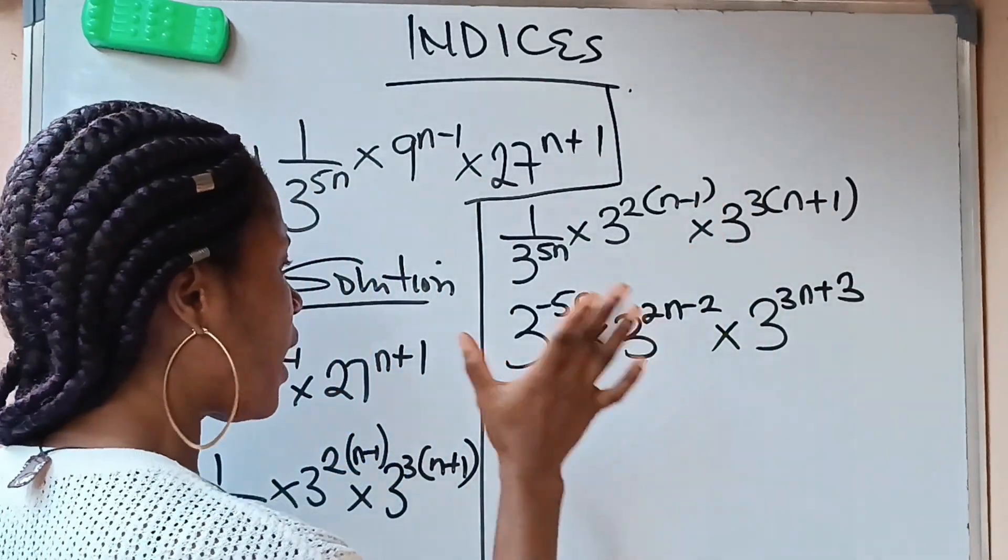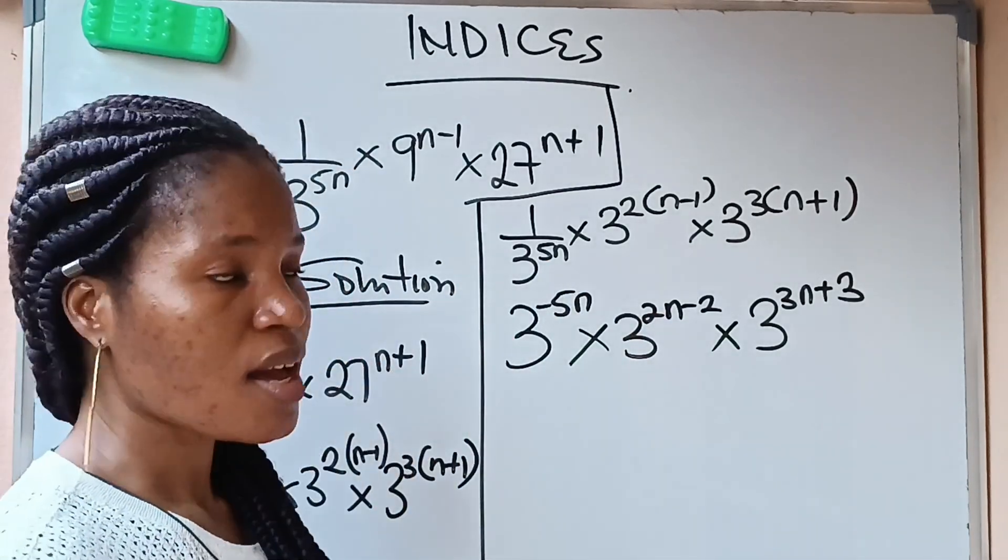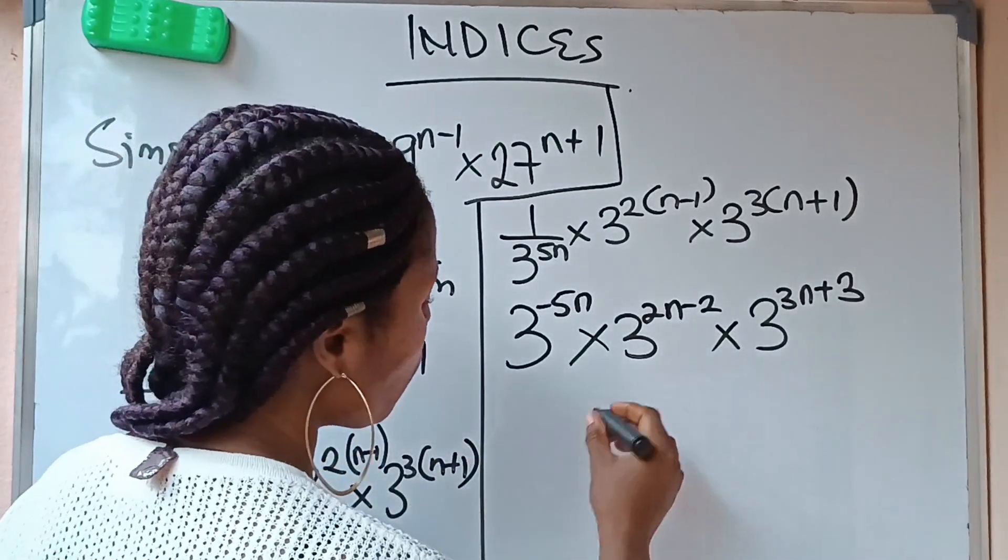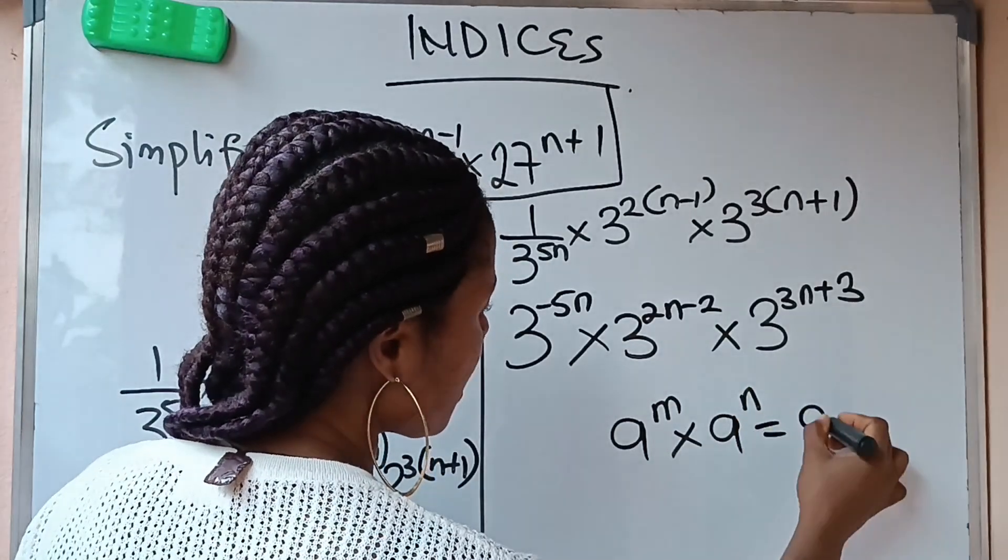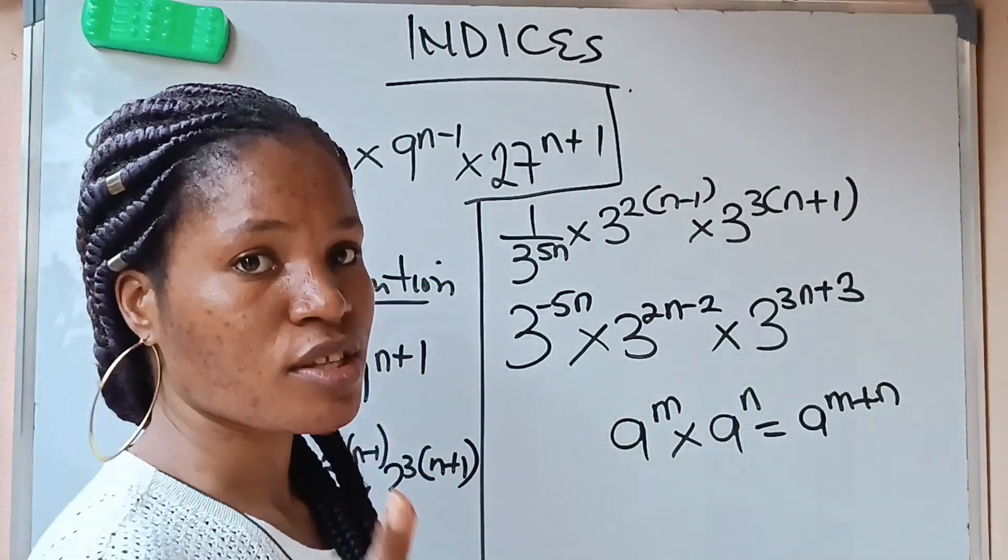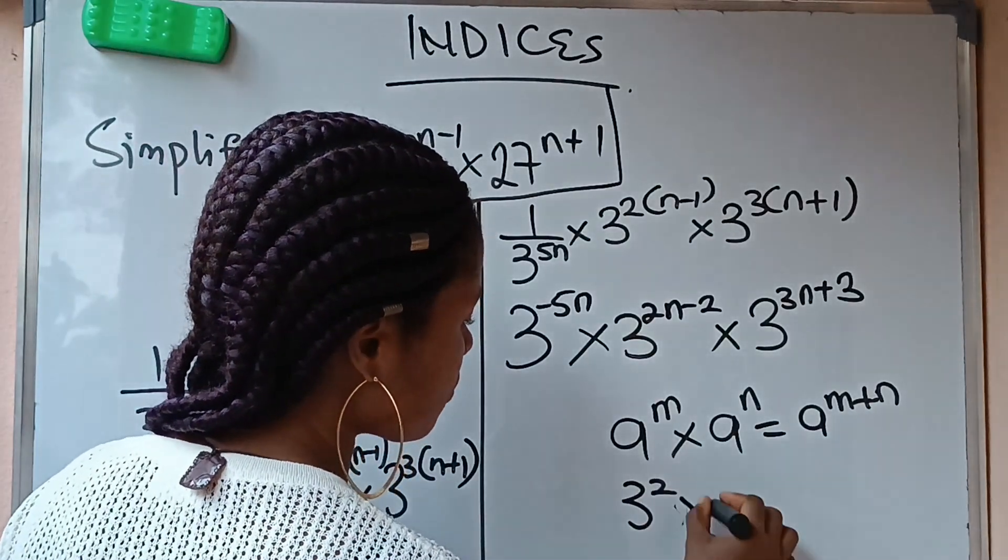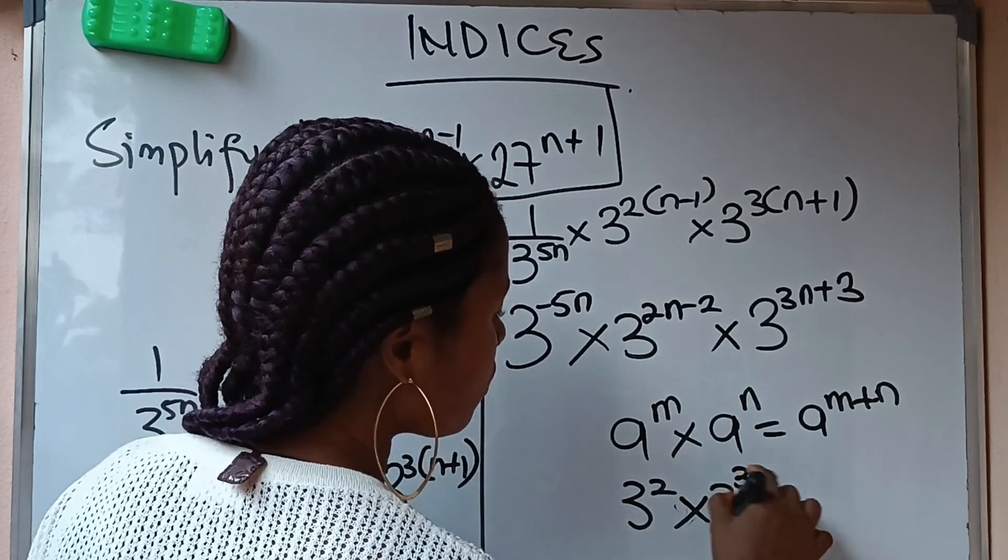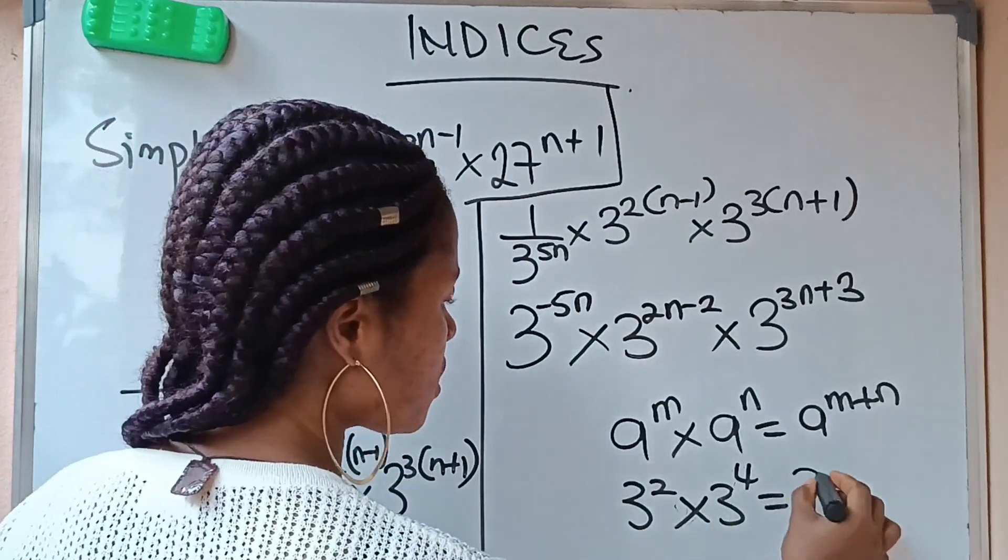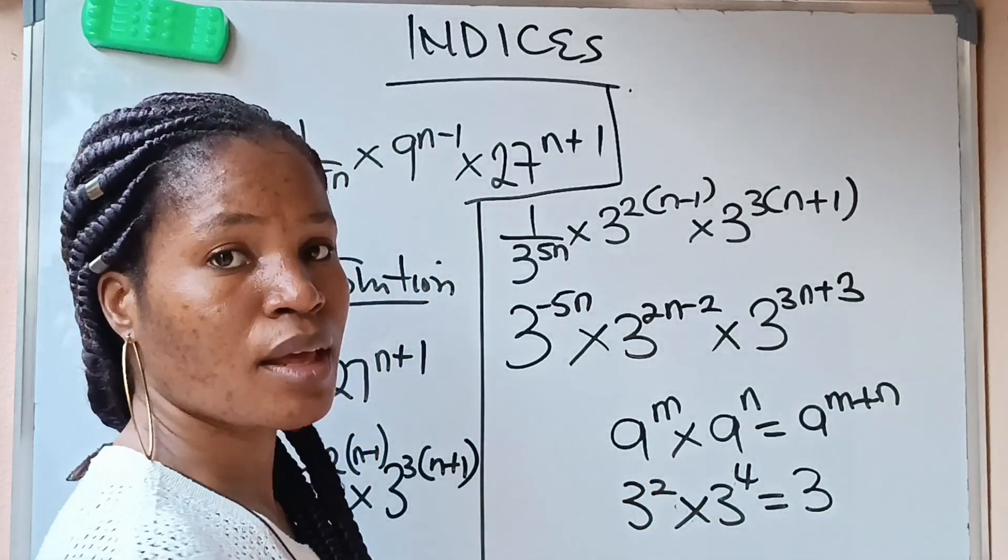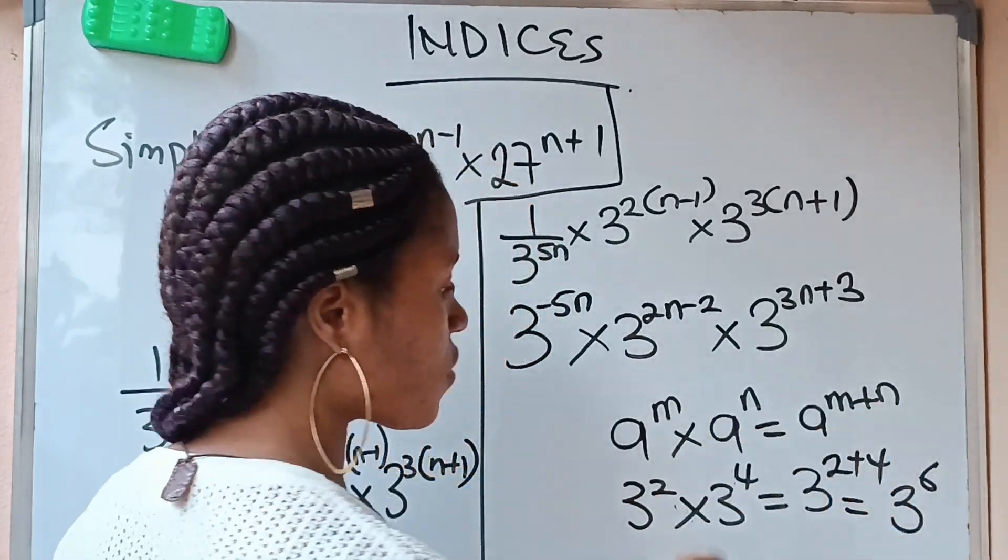Now I want you to pay close attention to what I'm about to do. There is this law of indices. And this law states that when you have something like a raised power of m times a raised power of n, that is the same thing as a raised power of m plus n. Let me bring it on. For example, if you have 3 raised power of 2 times 3 raised power of 4, you are going to pick one of the bases, which is 3, and you are going to add the powers, which is 2 plus 4. So your final answer will now be 3 raised power of 6.